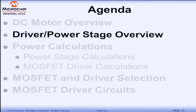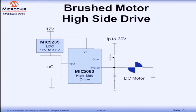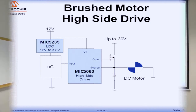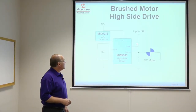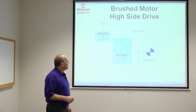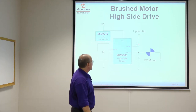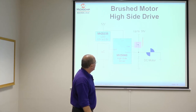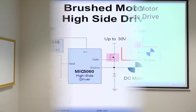Now let's talk about the different power stages we use to deliver power and control the motor. In this example, we're looking at a simple brushed DC motor with a high-side driver supplying an N-channel MOSFET. This MOSFET is used to turn the motor on and off. When the MOSFET is off, no voltage is applied to the motor and it doesn't spin. When you turn the MOSFET on, voltage is applied across the terminals, current starts to flow, the motor develops torque, and it starts to spin.